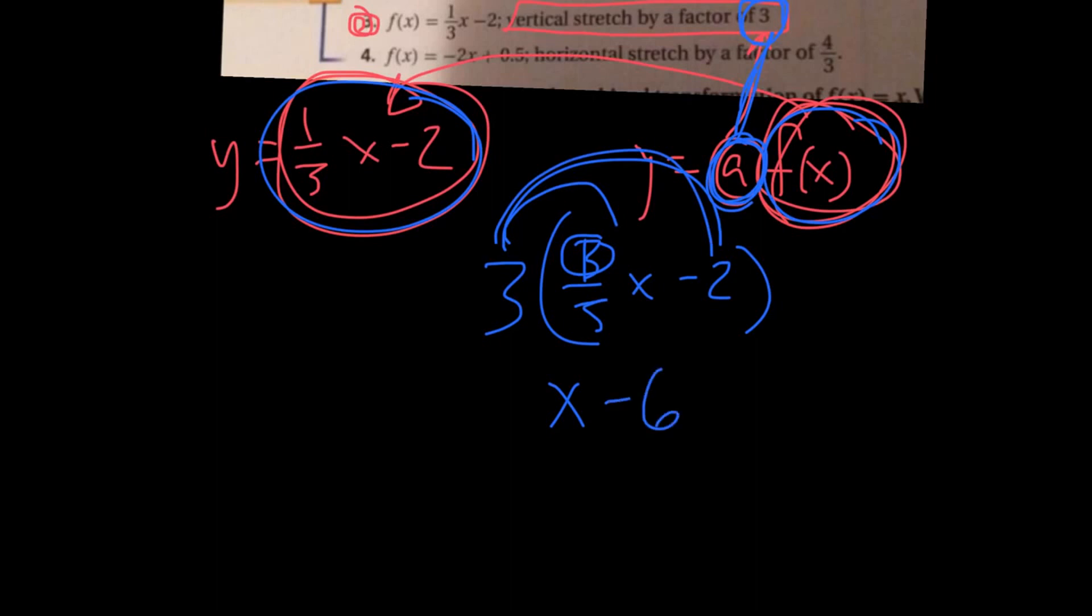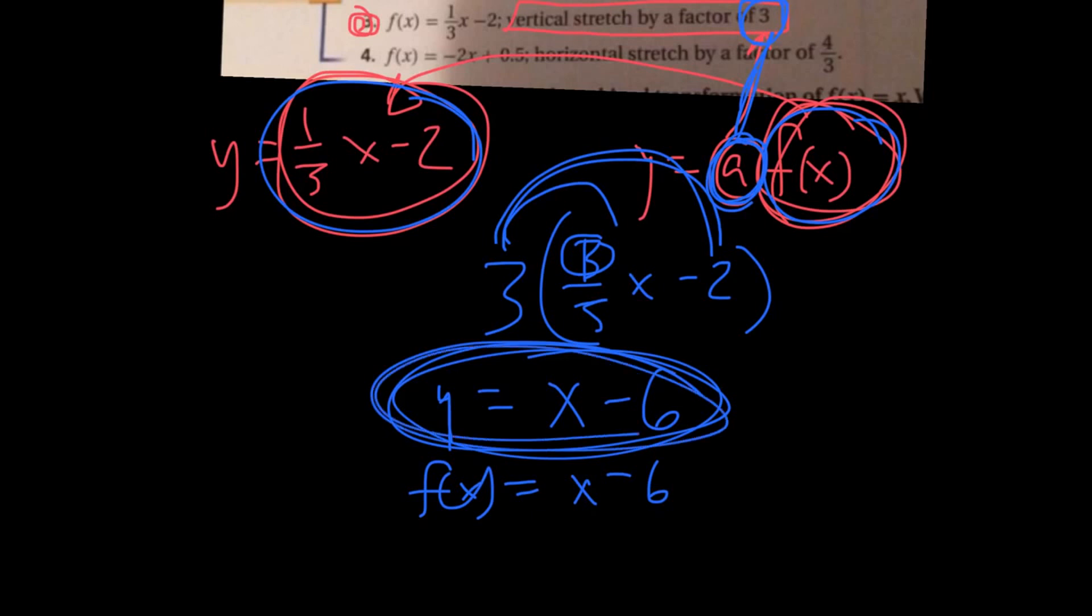And you're done, that's it. Y equals f, or f(x), whatever you want to say depending on your teacher and how strict they are about things being completely correct. But that's essentially what it is. So that'd be your new equation, and that's your vertical stretch by factor 3 in a nutshell. I'm sorry that was weird.